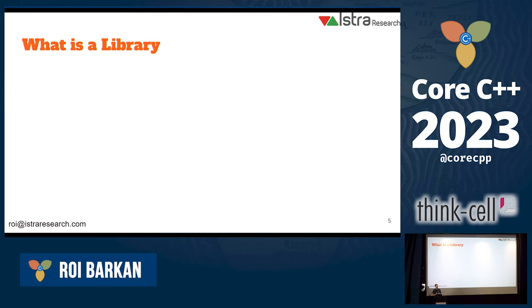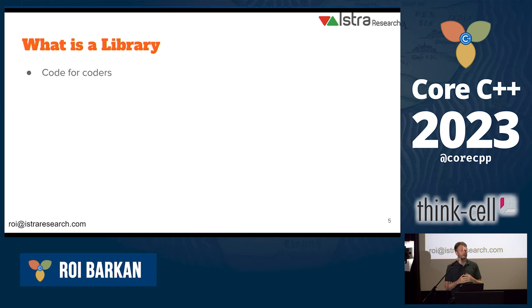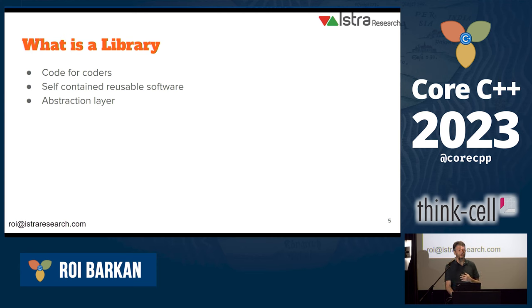So what is a library? When you talk about a software library, what comes to mind? I personally thought that it's like code for coders — it's not code that we write for someone else, but code that other coders use. Sometimes libraries are considered self-contained, reusable parts of software that we can ship with many different applications. Sometimes libraries are considered an abstraction with an external interface and an internal implementation.